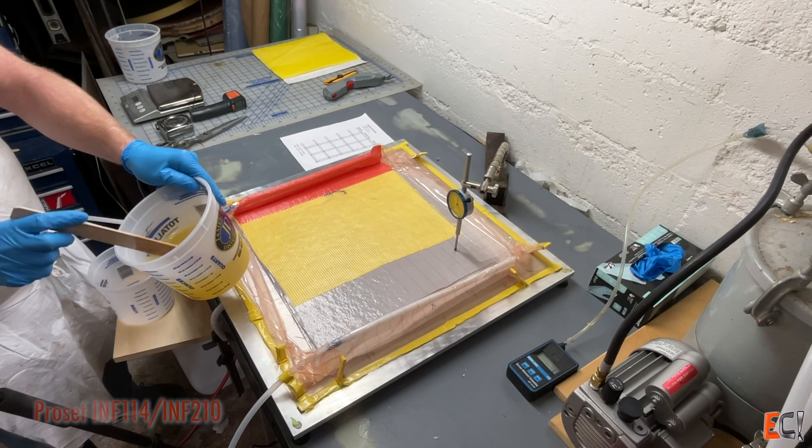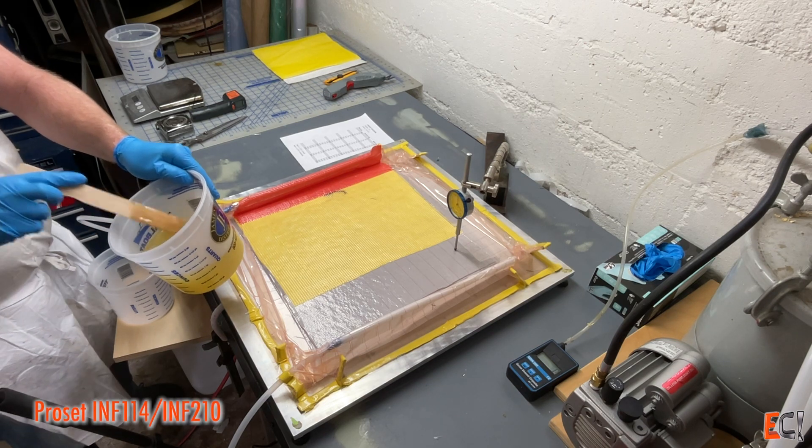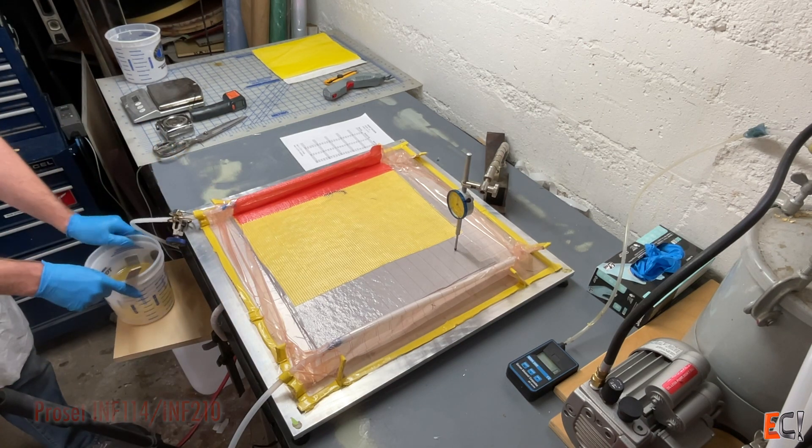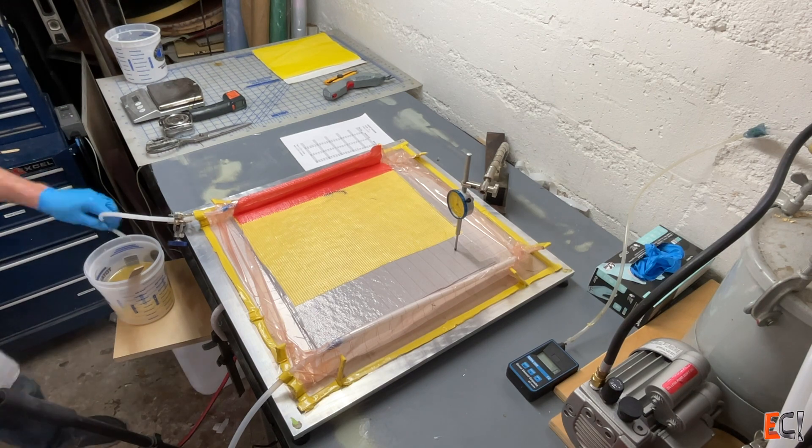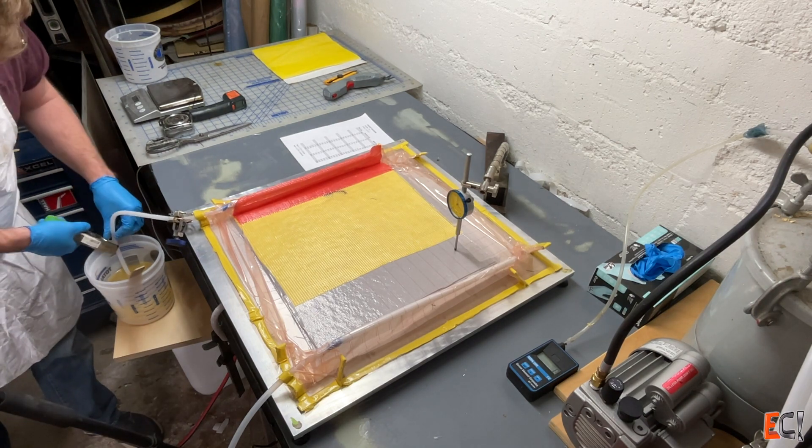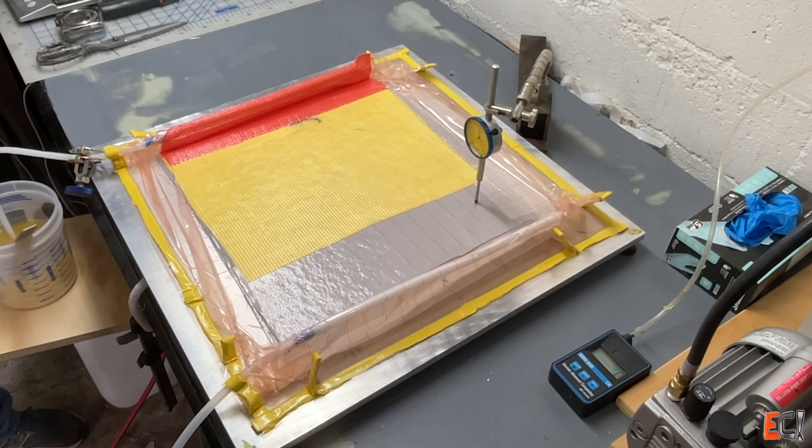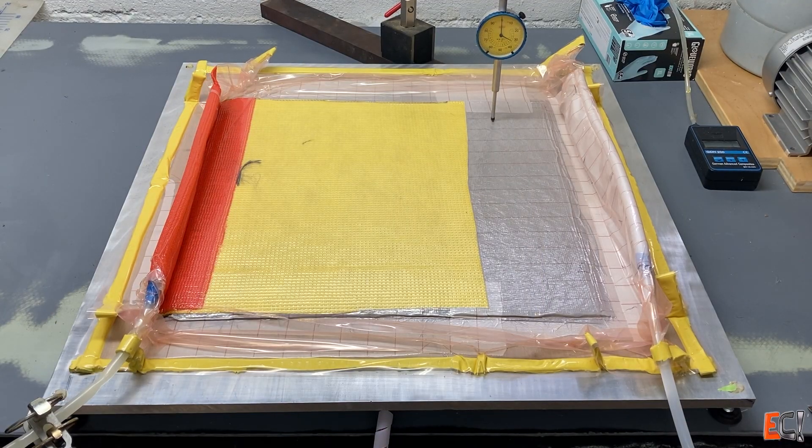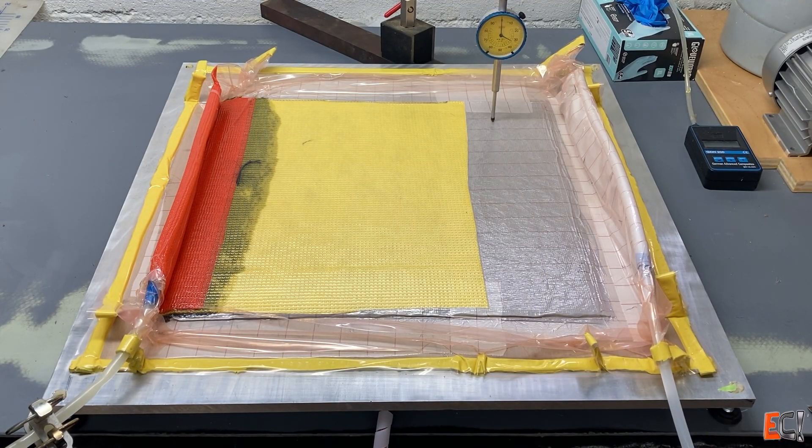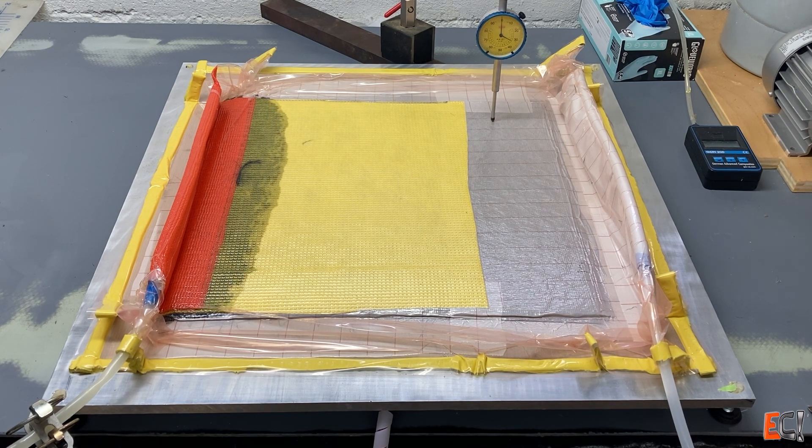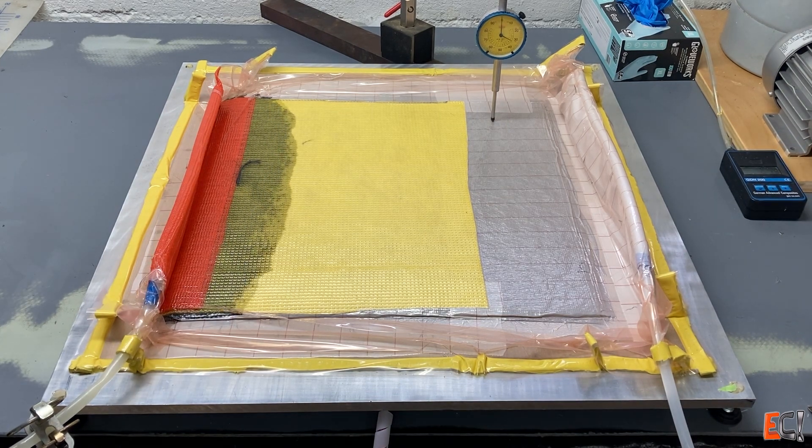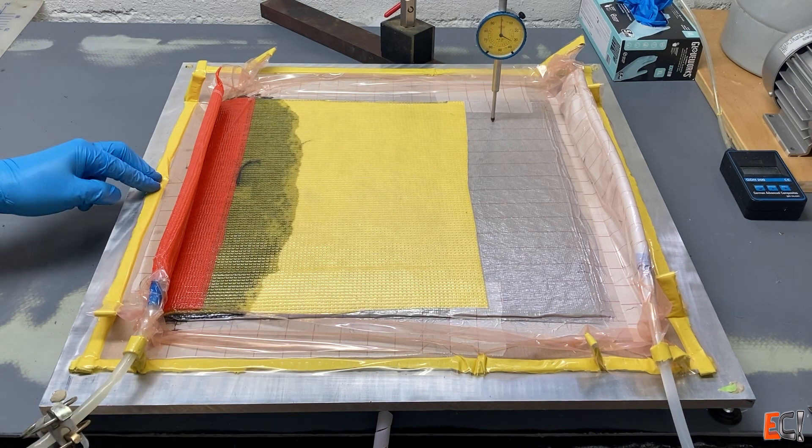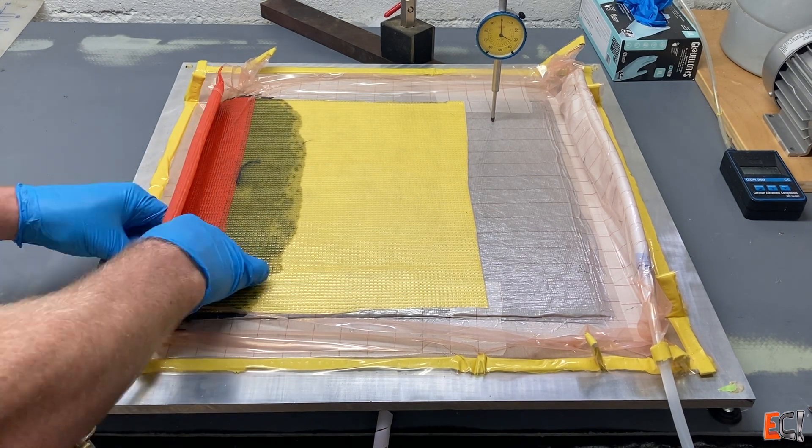See how much it squishes. Comes down very nicely and uniformly. No wrinkling in the material. You can see I've got a little dial indicator set up there on the bag. Mixed up the ProSet Infusion Resin here. This is fast resin, so I'm taking a little bit of a risk and hoping this fills quickly. But the temperature is reasonable.